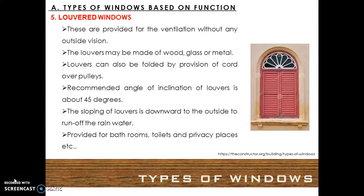Louvered windows. These are provided for ventilation without any outside vision. The louvers may be made of wood, glass, or metal. Louvers can also be folded by provision of a cord over pulleys. The recommended angle of inclination of louvers is about 45 degrees. The sloping of louvers is downwards to the outside to run off rainwater. These are provided for bathrooms, toilets, and privacy places.